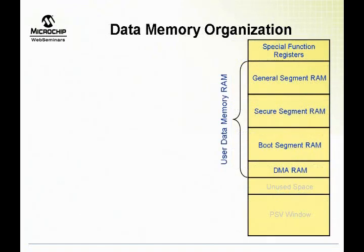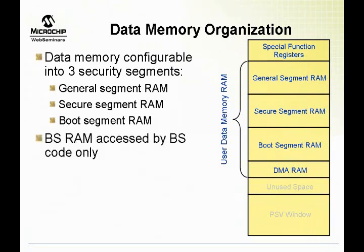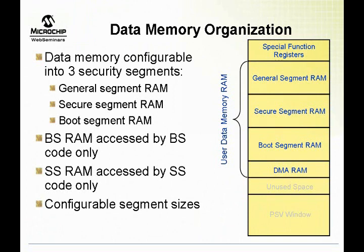Data memory organization: each protected segment in flash may allocate some RAM for its own use. Normally all of RAM is owned by the general segment. However, if a boot segment or secure segment have been defined, then RAM may be allocated for the boot and secure segments via bits in the configuration registers. The BSRAM allocation starts from the high memory addresses at the end of on-chip RAM. Since the stack grows from the low memory address towards the high memory address, BSRAM and SSRAM are allocated from the high end of the RAM area. Each of the boot segment and secure segment RAM spaces have configurable segment size options.